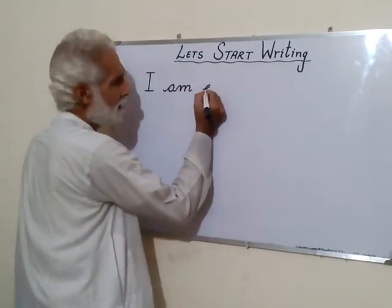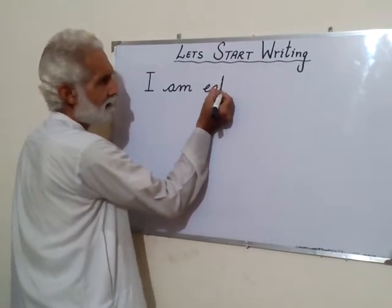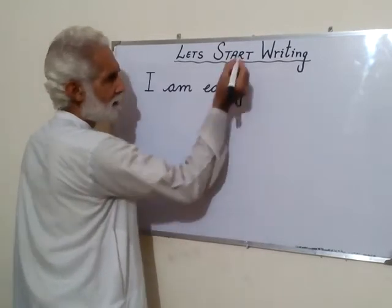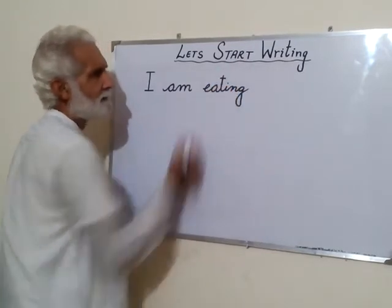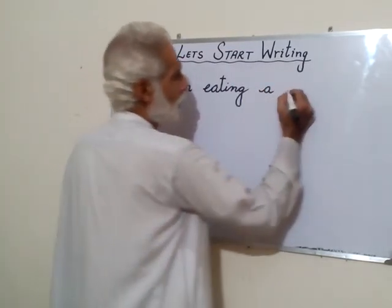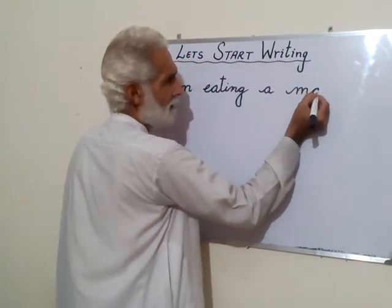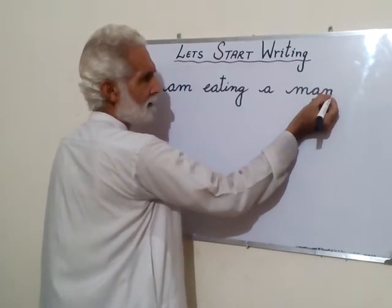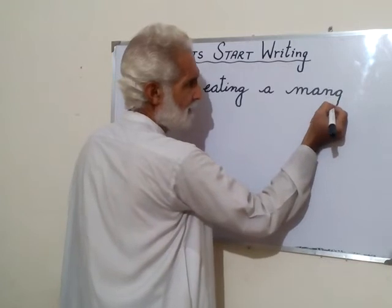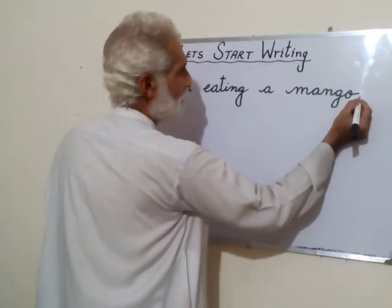Look: E, A, T — eat. Then I, N, and G — eating. Then A, simple A. Mango: M, A, then N, now G — first make a C, touch it, come down, take a turn, and go for O. Full stop. 'I am eating a mango.'